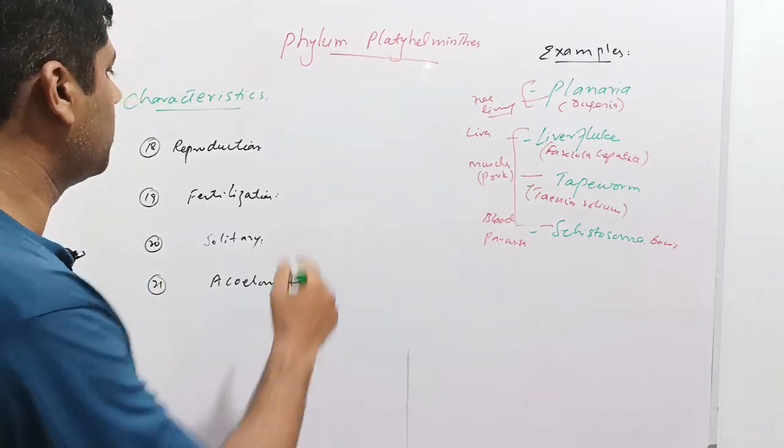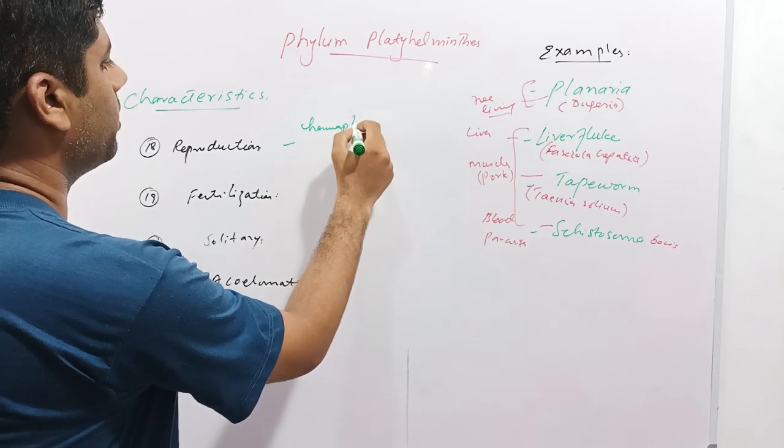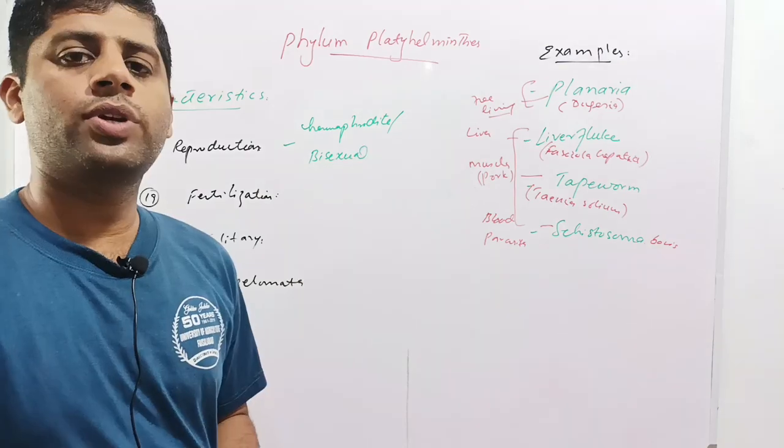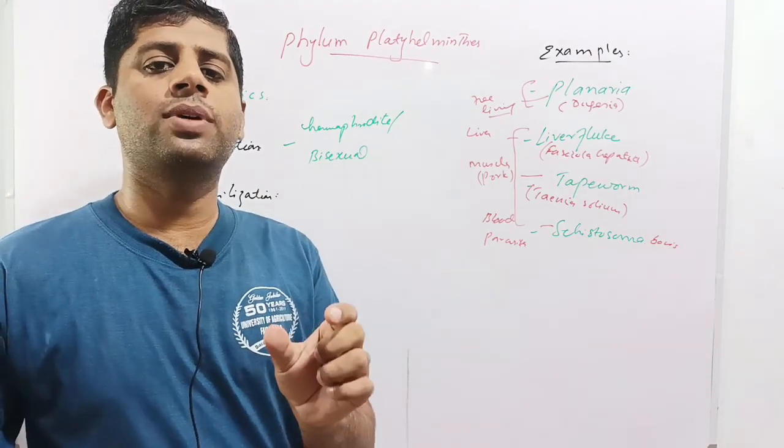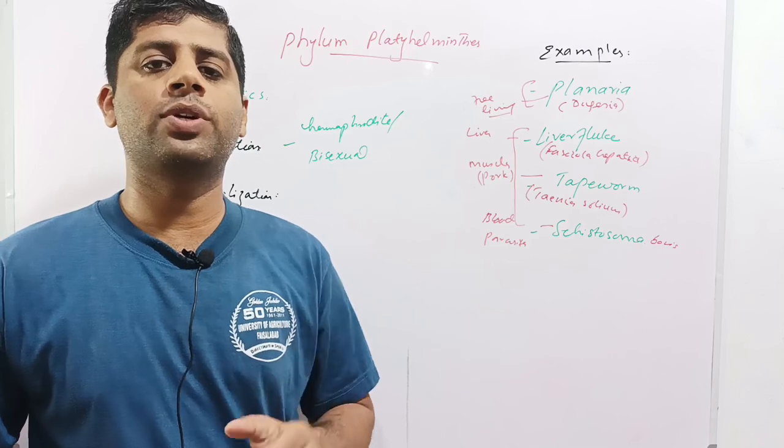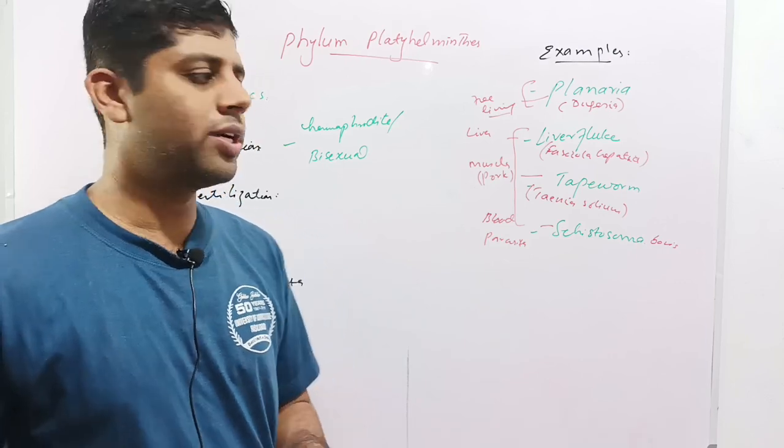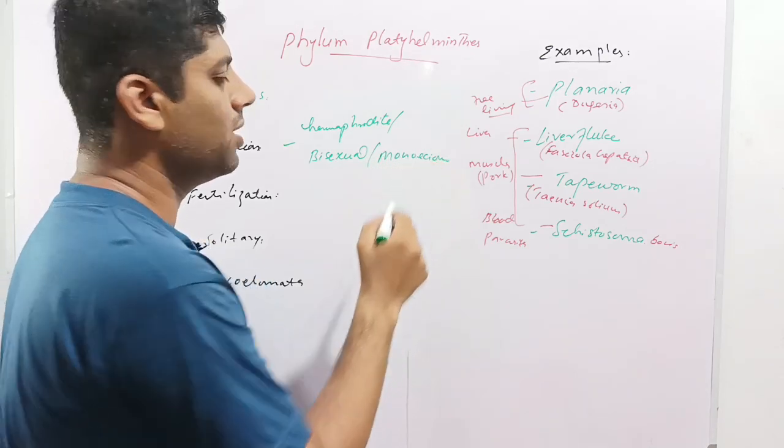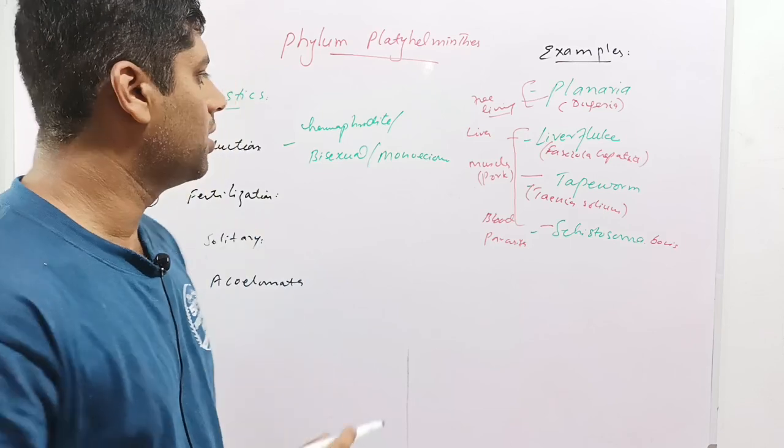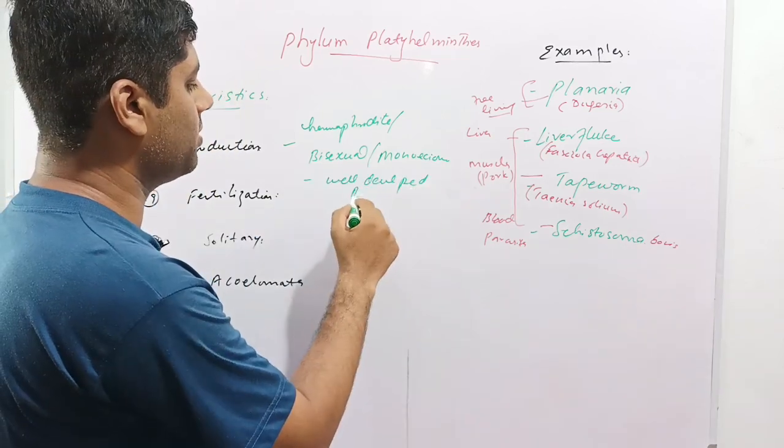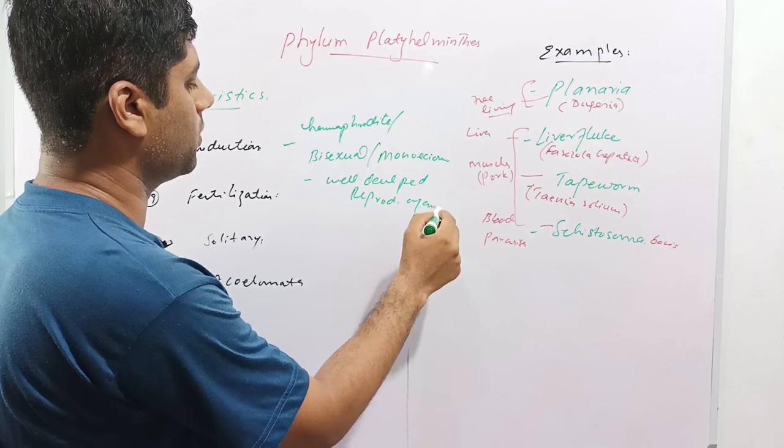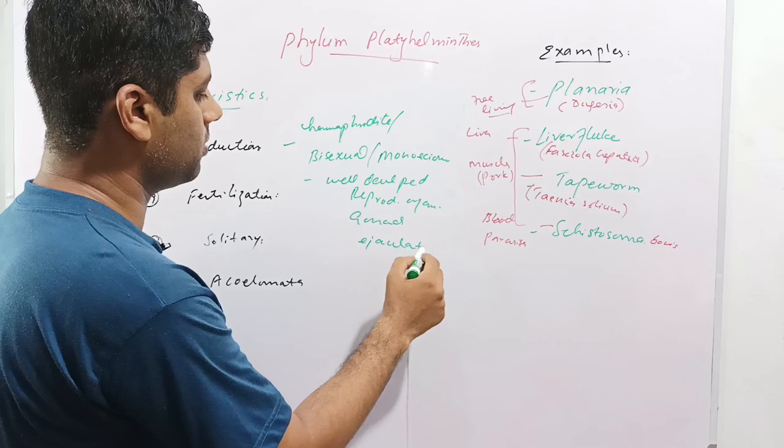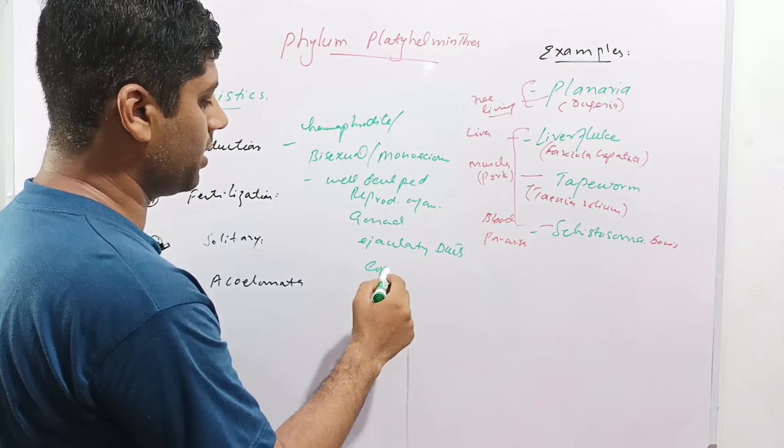Next is reproduction. These are basically hermaphrodites. Hermaphrodite means these are bisexual, meaning one organism comprises both male and female reproductive organs. This is called bisexual, hermaphrodite, or monoecious. Monoecious is a single animal having both male and female reproductive organs.